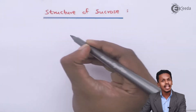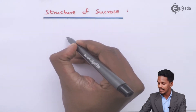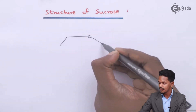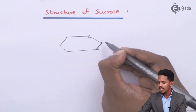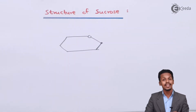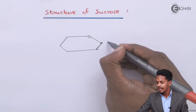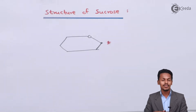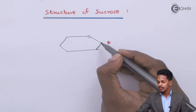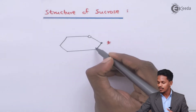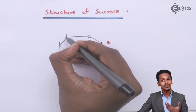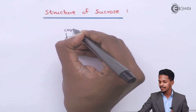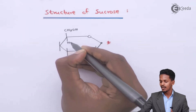Let me draw the alpha-D-glucopyranose pyranose structure. This is the first carbon atom, also known as the anomeric carbon atom, based on which we decide whether the glucose is alpha or beta-D-glucopyranose. To the fifth carbon atom there is an attachment of CH₂OH, and on the lower side there is hydrogen attached to it.